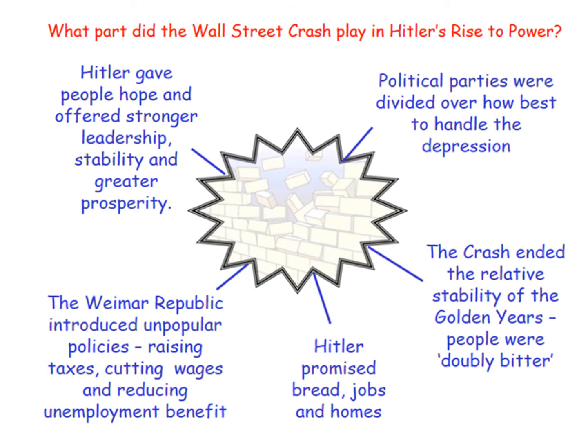As a quick recap from the last lesson, thinking about things like the Wall Street Crash - we're thinking about how this gave a lot of power to Hitler's rise to power and what kind of role it played. The political parties were divided on how best to handle the depression that followed in Germany. They tended to be coalition governments so they ultimately didn't seem to be doing an awful lot, whereas Hitler and the Nazi party were opening soup kitchens and doing more.